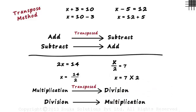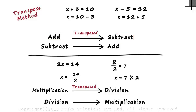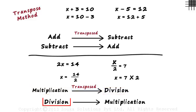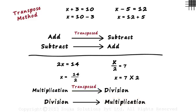So remember these four rules: if a term is added, then it's subtracted when transposed. If subtracted, then it's added when transposed. If multiplied on one side, then it's divided when transposed. And if it's divided on one side, then it's multiplied when transposed. Now let's see how the transpose method helps us solve an equation.